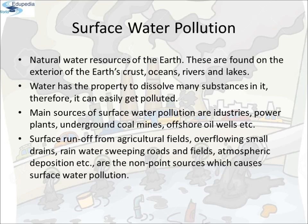Surface Water Pollution: These are the natural water resources of the Earth, found on the exterior of the Earth's crust — oceans, rivers, and lakes. Water is an essential commodity for survival. We need water for drinking, cooking, bathing, washing, irrigation, and for industrial operations. Most of the water for such uses comes from rivers, lakes, or groundwater sources.